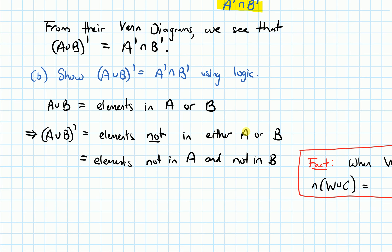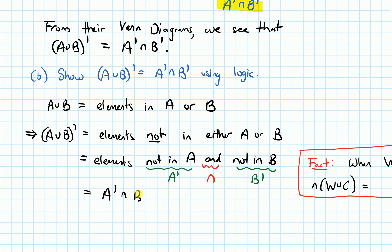This is the same thing as saying these are the elements that are not in A and not in B, because if you're not in either A or B, that means you're not in the first one and not in the second one. Seeing the word 'and' makes us think of intersection, just like seeing 'or' makes us think of union. And 'not in A' is A complement, 'not in B' is B complement. So what we have is A complement intersected with B complement. We've just shown that the complement of A union B is the same thing as A complement intersected with B complement.